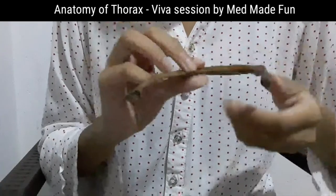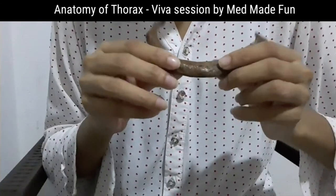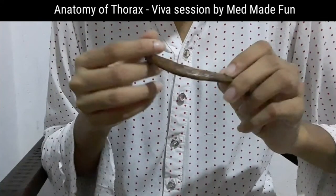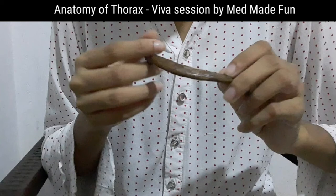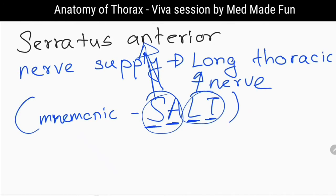The second rib is not twisted like the first rib. The main unusual feature of the second rib is the roughened tuberosity on its superior surface, which forms part of the origin of the serratus anterior muscle. To surface mark the second rib, first identify the sternal angle, then pass a finger directly to the right or left to find the second costal cartilage and the second rib. After identifying the second rib, all other ribs can be identified from that point. The nerve supply of serratus anterior is the long thoracic nerve.